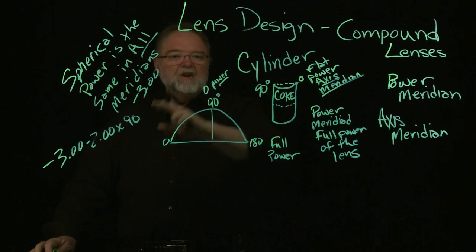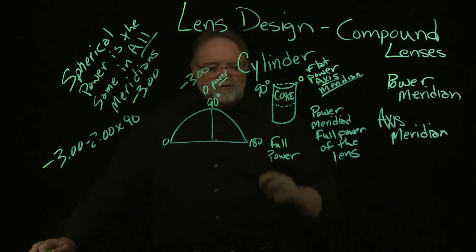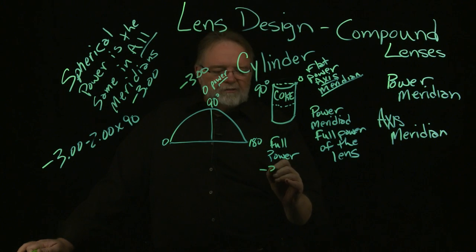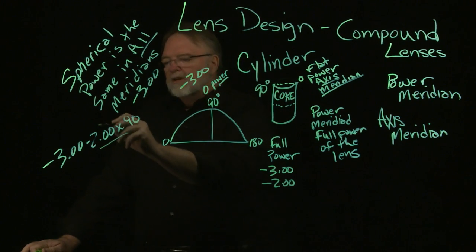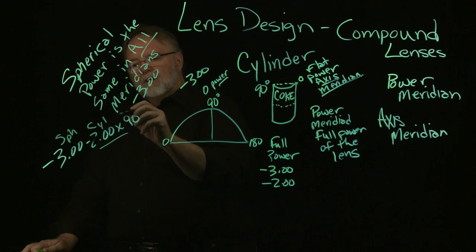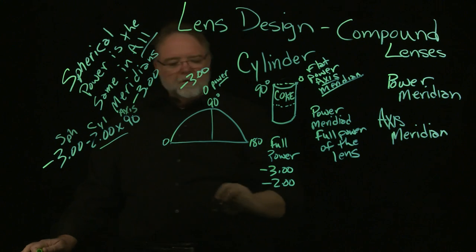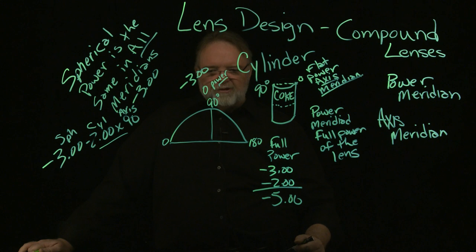Because remember, that's the same in every meridian. So we've got a minus three in effect at 90. When we get to 180 and we have the full power, we still have that minus three because it's in every meridian. But we also have the minus two that comes from the cylinder part of this. And so the full power of that lens in the 180th meridian is five diopters.